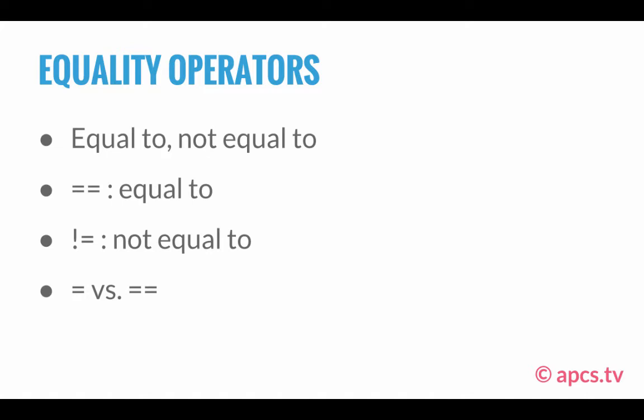Now let's look at equals versus equals equals. A single equals sign is an assignment operator — as we saw earlier in the addition program, sum equals number one plus number two. So a single equals sign is used when you're assigning a value, while the equals equals sign is an operator used when you want to compare two things. If I say y equals equals x, that will not make y equal to x — it will simply return true or false whether y is equal to x. But if I say y equals x, that assigns y to the value of x.